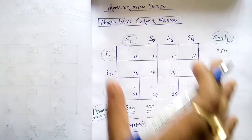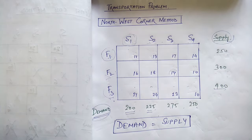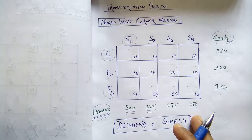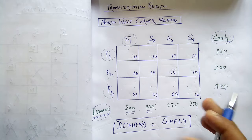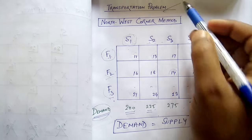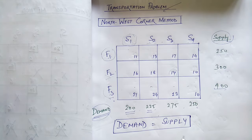First, we will start with the Northwest Corner Method. I am going to tell you why we use this method. But first, understand this transportation problem.